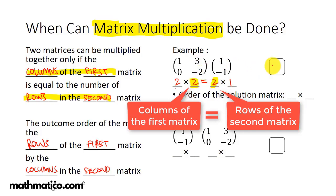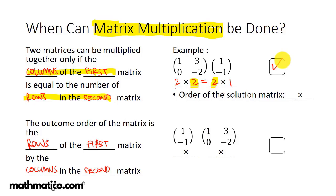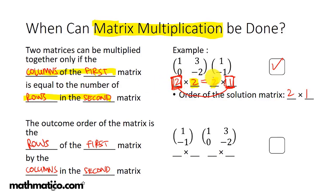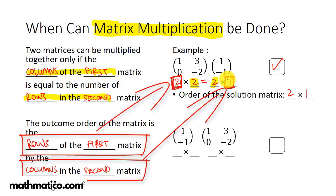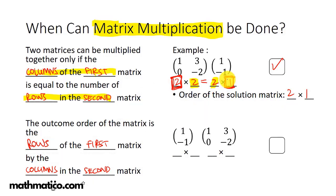Then we look at the outer numbers to find the order of the solution matrix, which is 2×1. So a 2×2 multiplied by a 2×1 gives a 2×1 result. The order of the solution matrix will be the rows of the first by the columns of the second.